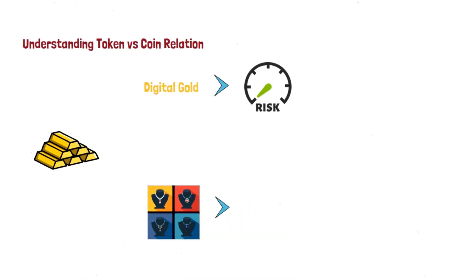Similarly, we have 22 karat gold, which is actually derived from 24 karat gold in terms of material. So we have two derivatives: one derived materially, and one derived in terms of value, since digital gold gets its value from the market value of gold. Giving crypto terms to this: 24 karat gold is our coin, and 22 karat gold and digital gold are tokens.